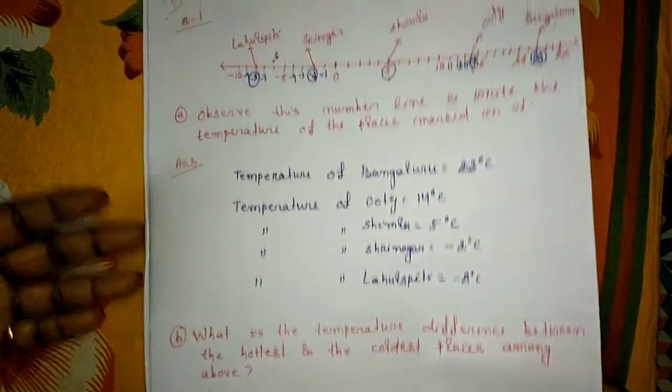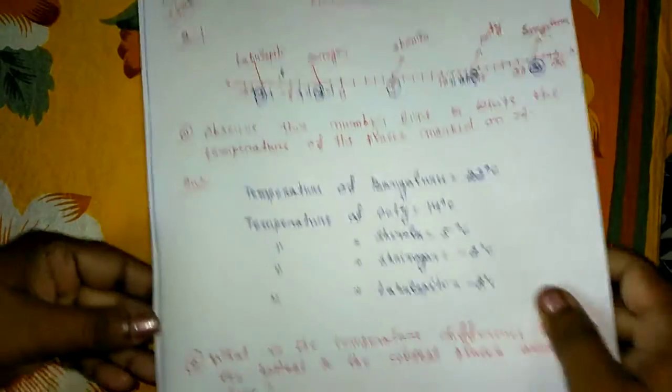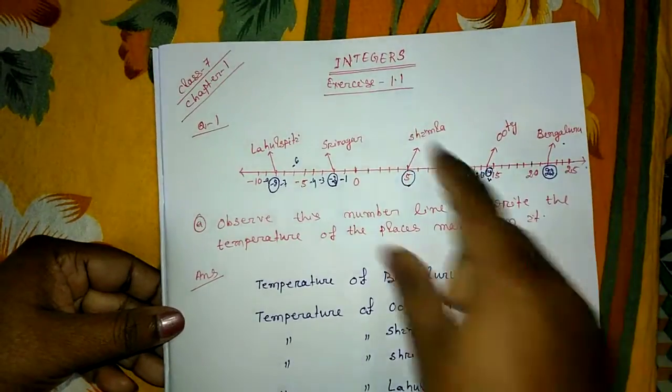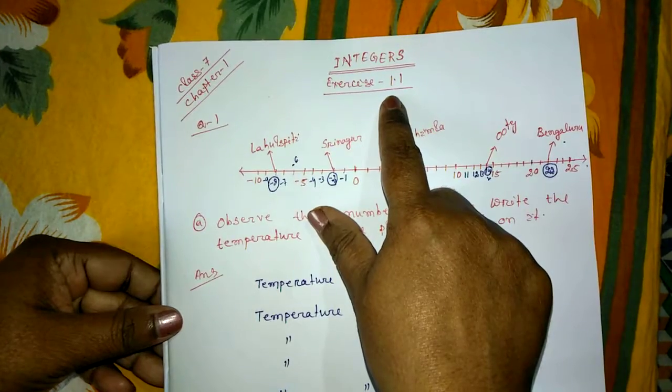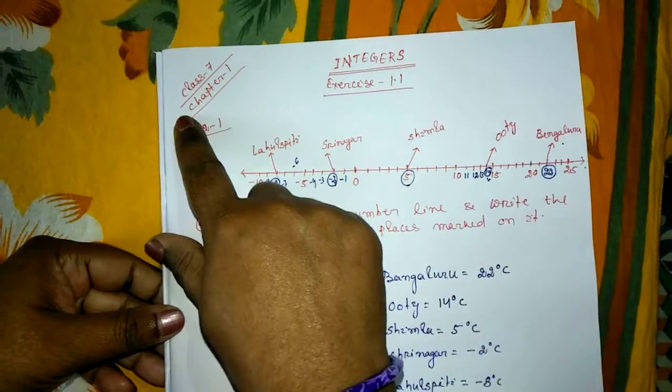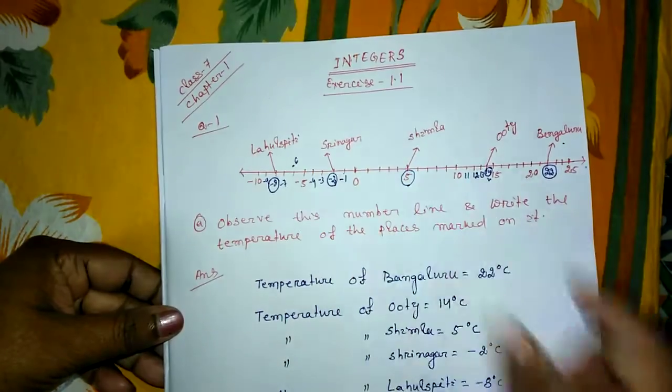Hello friends, I am again with the chapter integers. This is the first chapter of class 7, chapter 1, exercise 1.1.